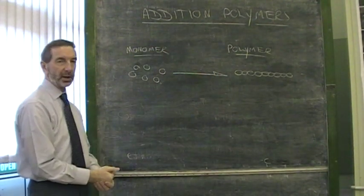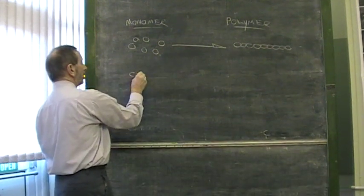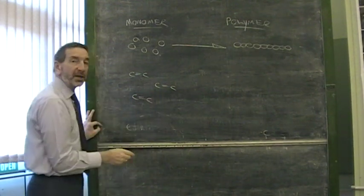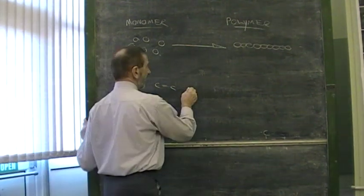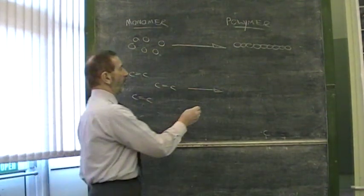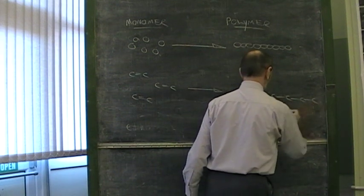But how do they join together? If these monomers have carbon to carbon double bonds, they must be carbon to carbon double bonds, then given the right conditions, they can join together by the breaking of these bonds. So instead of double bonds, we end up with the same molecules joined together like this.